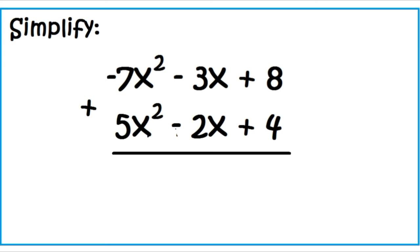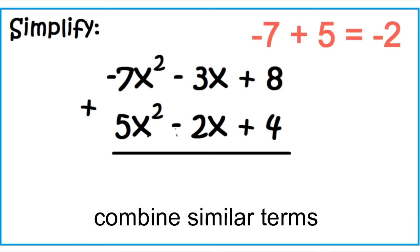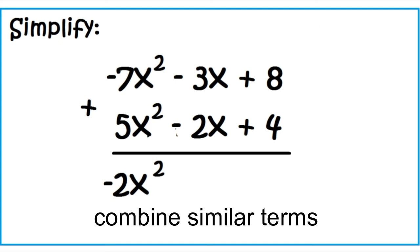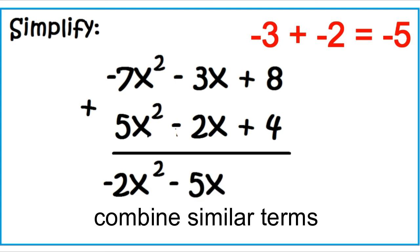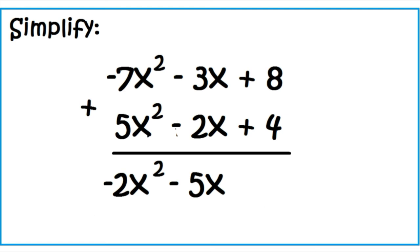Simplify: the quantity negative 7X squared minus 3X plus 8 plus the quantity 5X squared minus 2X plus 4. Combine similar terms. Negative 7X squared plus 5X squared is negative 2X squared. Negative 3X plus negative 2X is negative 5X — you can write minus 5X instead of plus negative 5X. 8 plus 4 is 12. The answer is negative 2X squared minus 5X plus 12.